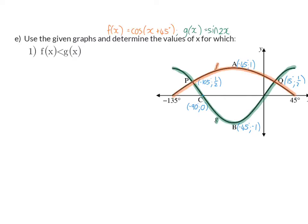Use the given graphs and determine the values of x for which f(x) is smaller than g(x). Now, f(x) is our orange graph, and smaller than means below the g(x) graph, which is our green graph.